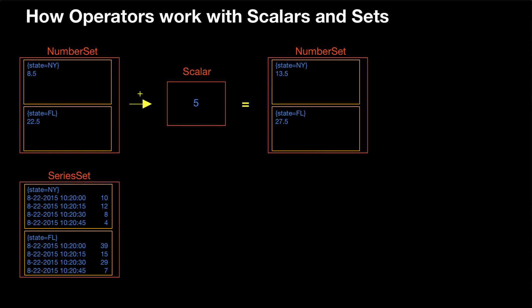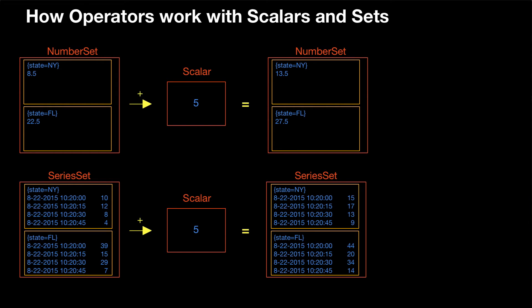We can look at this for a series set too. A series set is a set of time series, and each time series is identified by its tag set, with multiple values in a time series. So we apply the addition operator to that, and again the scalar constant number five, and what that gives us is a series set. We've taken the series set and each item in it, and taken all of its values and added five to each individual value. In pseudocode, we create a new set, iterate over each item in the set, and for each value in each item, add the scalar value. That works for both a number set with one value and a series set with multiple values.